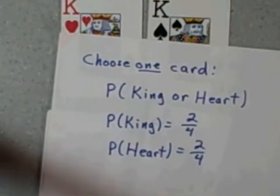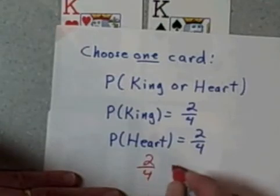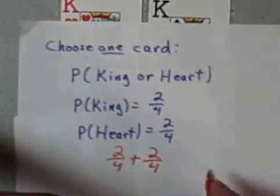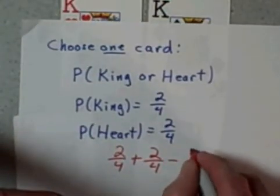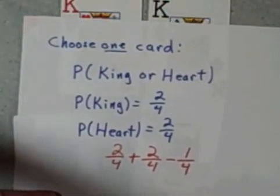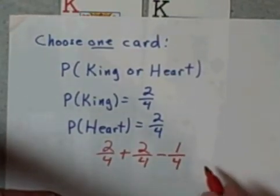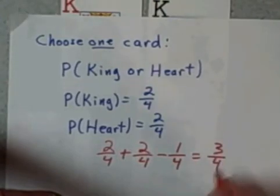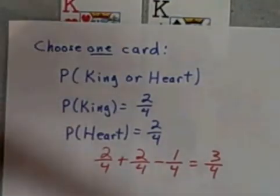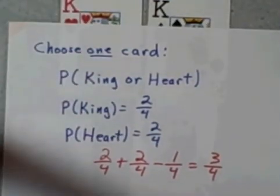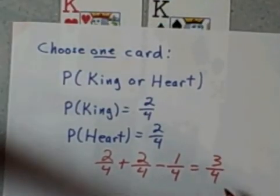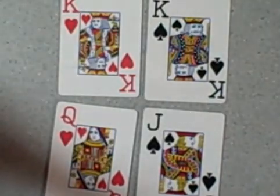So to really calculate this, what I need to do is add these two together, this two fourths plus two fourths, but realize I counted one of the four cards twice and I don't want to do that. I don't want to count any card more than once. So we're going to back that out by subtracting that one card. So two fourths plus two fourths minus one fourth equals three fourths. The probability that I pick one card and it's either a king or a heart is three out of four. And that's easily seen here because three out of four cards are either kings or hearts.